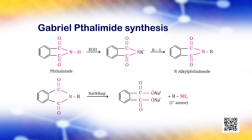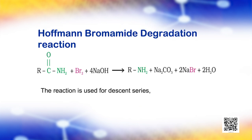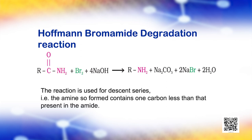Hoffmann developed a method for preparation of primary amines by treating an amide with bromine in an aqueous or ethanolic solution of sodium hydroxide. In this degradation reaction, migration of an alkyl or aryl group takes place from carbonyl carbon of the amide to the nitrogen atom. The amine so formed contains one carbon less than that present in the amide.